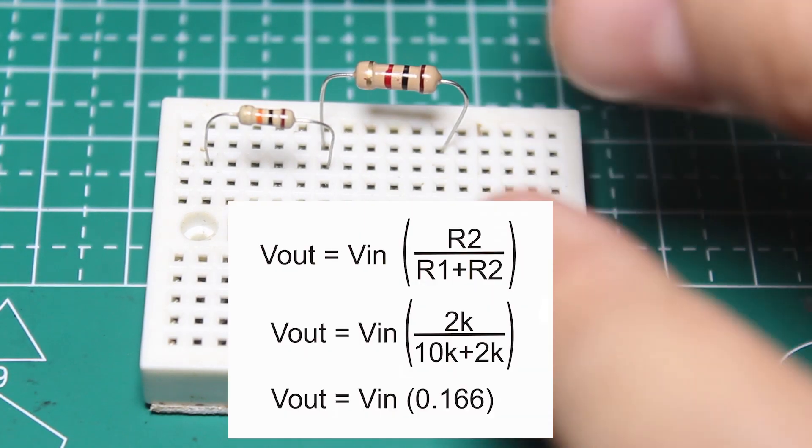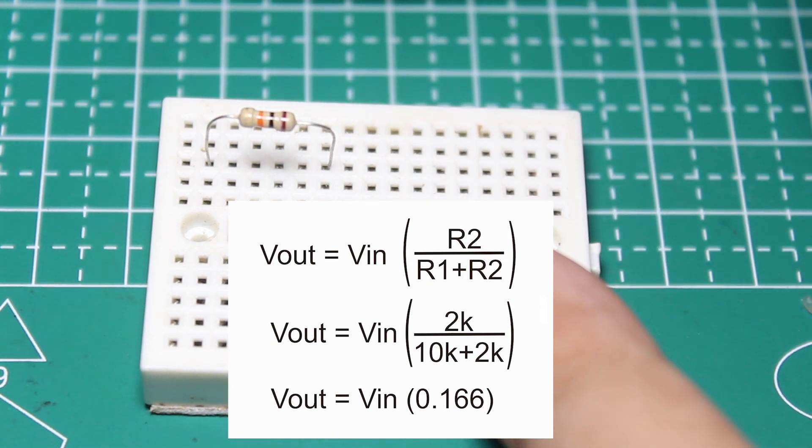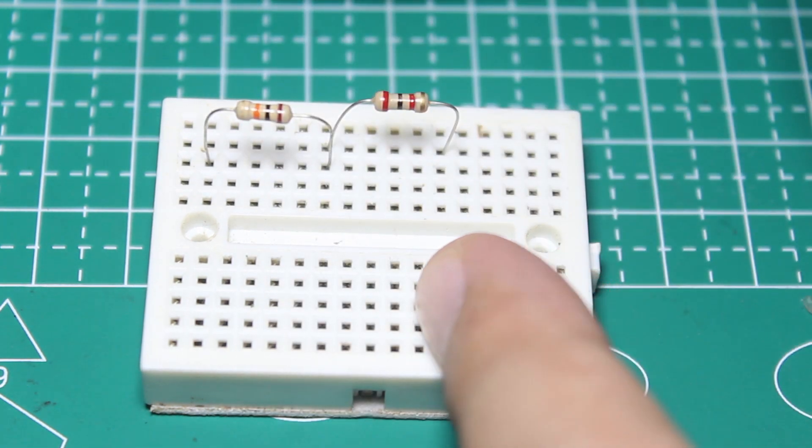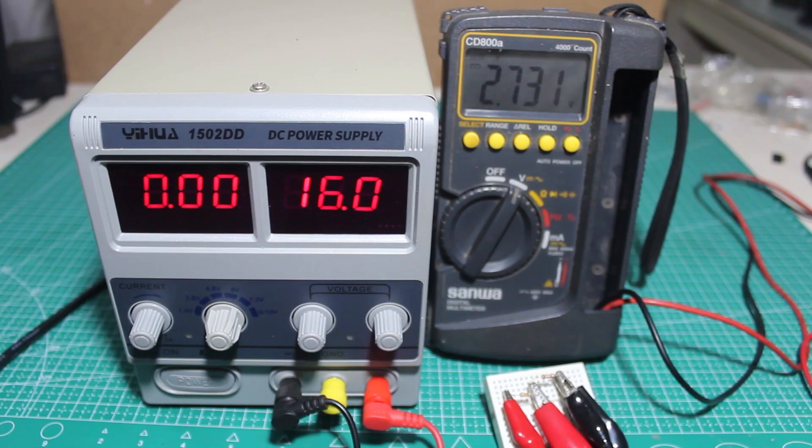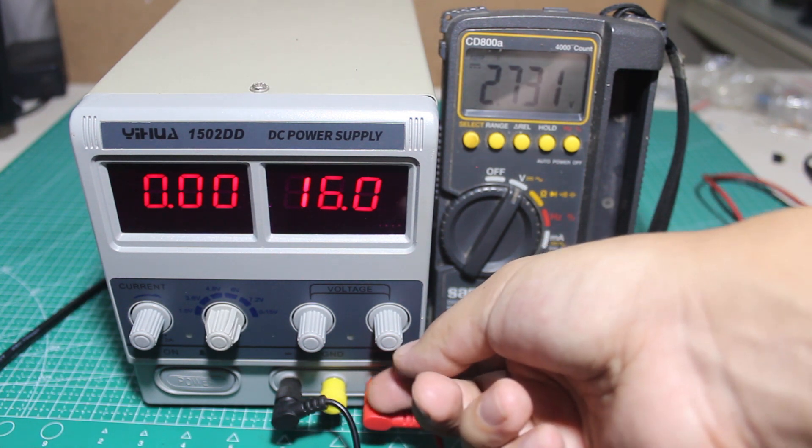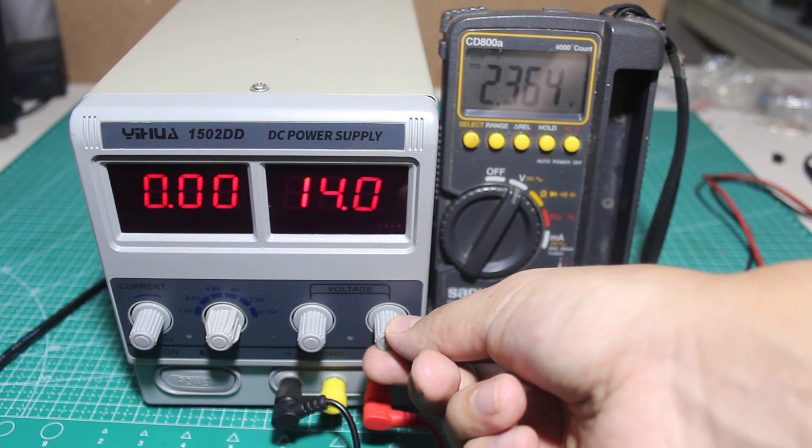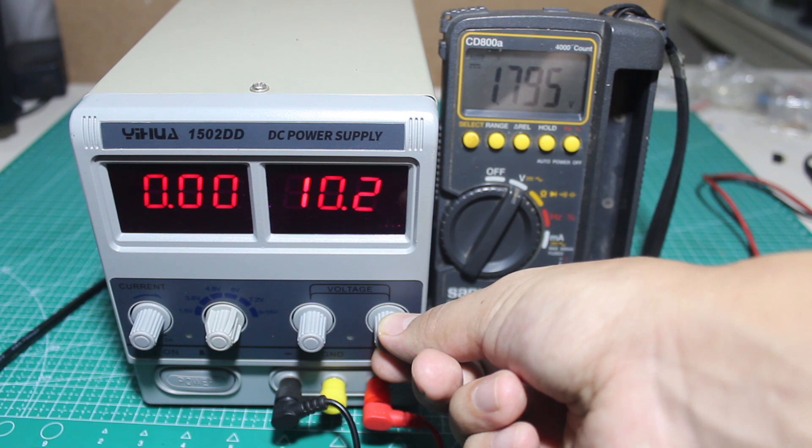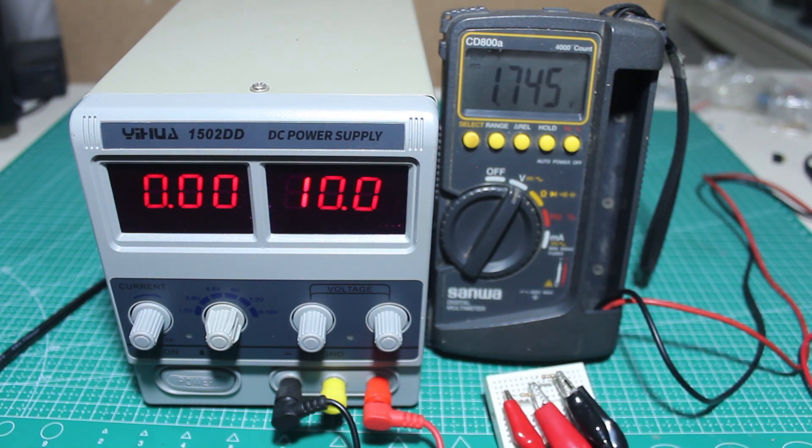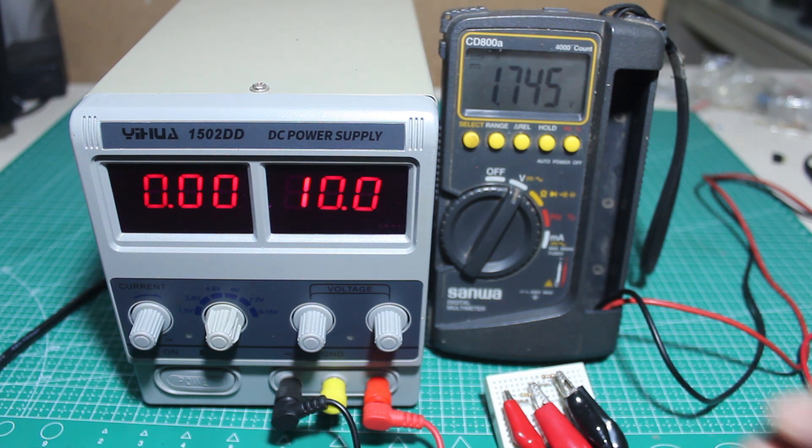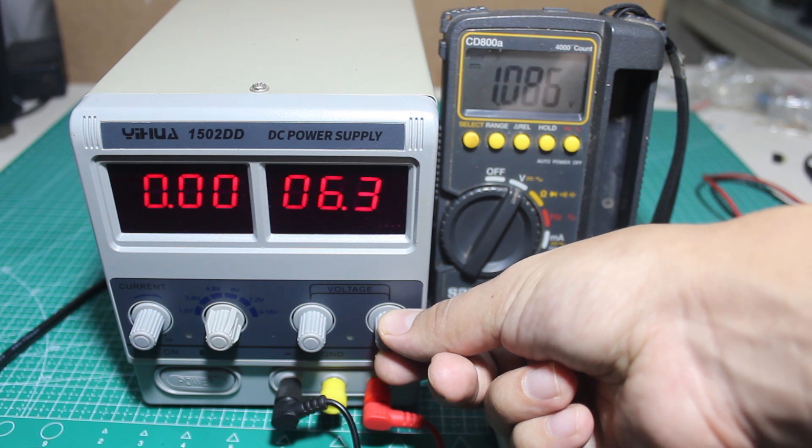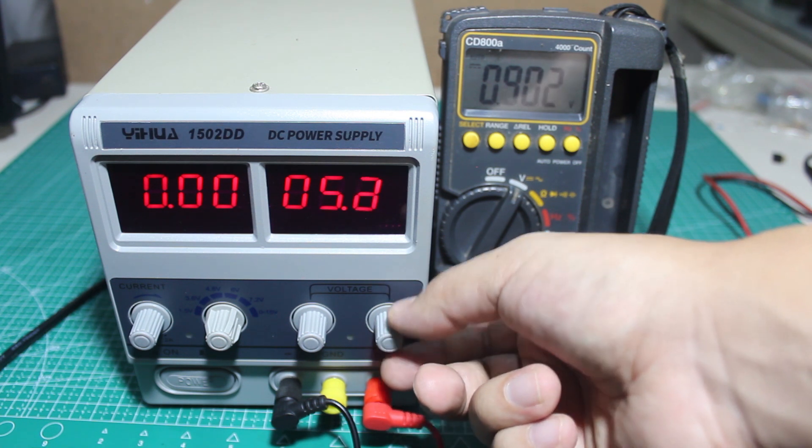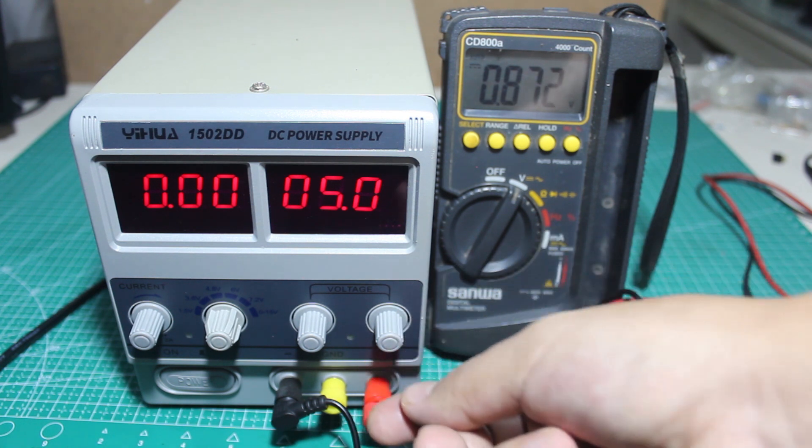The third example is 10k and 2k resistors, so the output is about 0.166 Vin.